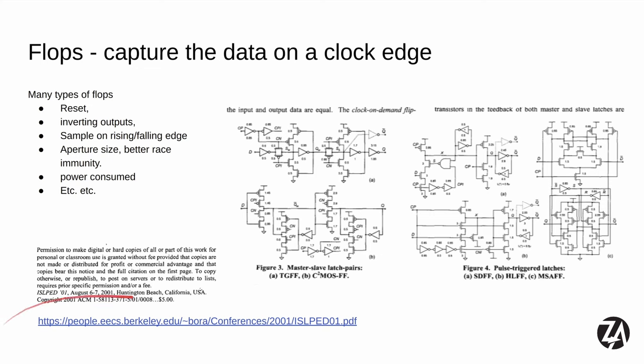We'll use a pair of latches to build a flip-flop. Flip-flops are a way of sampling a bit of data as the clock comes in, then holding it steady no matter what the D input is doing, waiting until the next rising clock edge. There's a wide variety of flip-flops — a paper recommended by a friend covers different types with inverting outputs, reset, sampling on rising and falling edges, and different setup and hold times that result in different aperture sizes, power consumption, and other trade-offs.